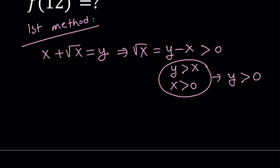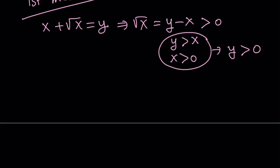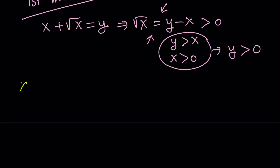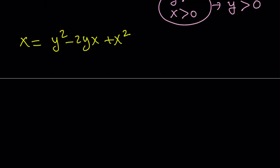Under those conditions, let's go ahead and solve this equation for x. If we square both sides, we get x = y² − 2yx + x². Writing this as a quadratic equation in x — putting everything on the same side — it becomes x² − (2y + 1)x + y² = 0.